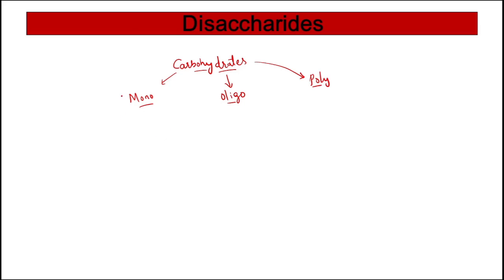In the previous video we studied about these monosaccharides. Monosaccharides are one sugar unit - one carbohydrate. Mono means single, so one sugar unit.